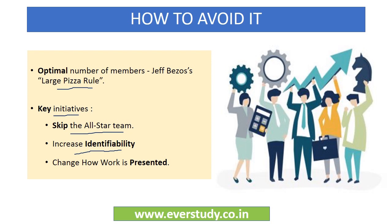And the third key initiative is change how the work is presented. Work ko manageable size mein divide kiya jaye jo kuchh dinon mein poora kiya ja sake. Due to this, every time a part of work is completed, feeling of accomplishment arises jo ki motivate karta hai to effectively work on the next section of the task. And the manager will also be able to measure each co-worker's effort and work product. The Ringelmann effect ko detect karna difficult hai, but team productivity agar decrease hoti hui dikhe, it is always better to take corrective measures and quickly implement one of these three strategies in order to avoid it.